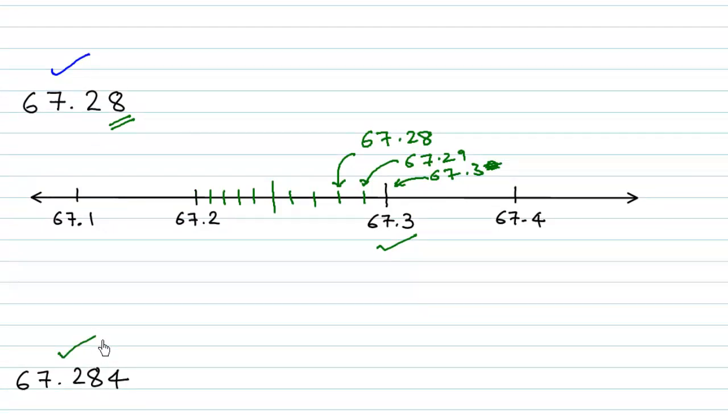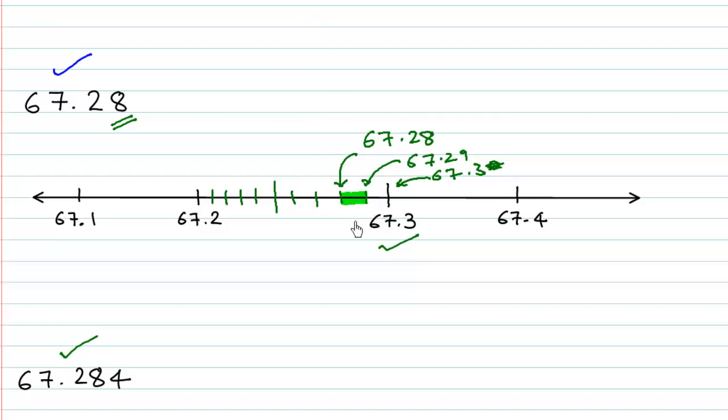And further if you want to find where will this number 67.284 lie, so what are we going to do is we are going to zoom this particular division between 67.28 and 67.29. This particular division because this number 67.284 is greater than 67.28 but less than 67.29.